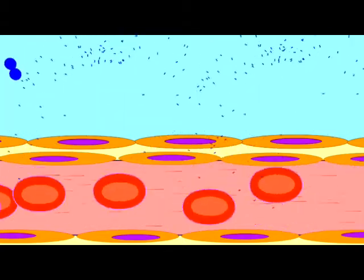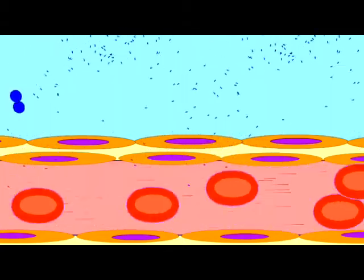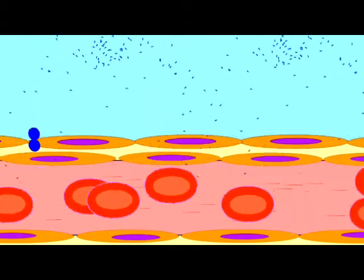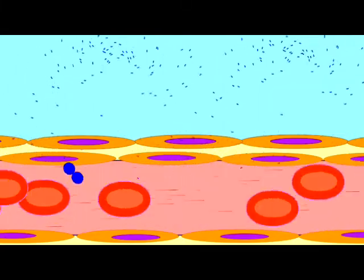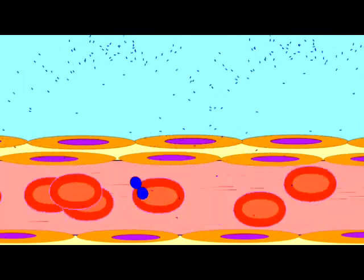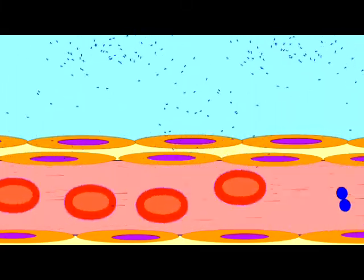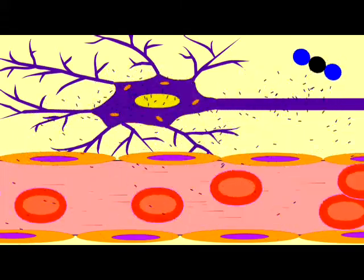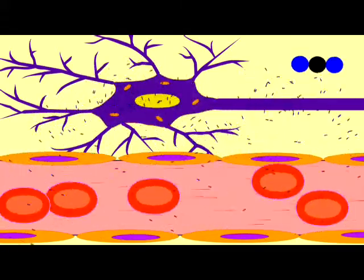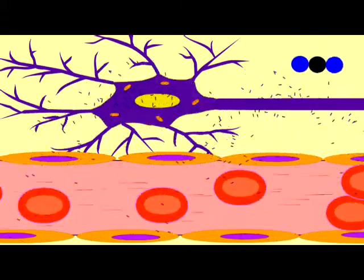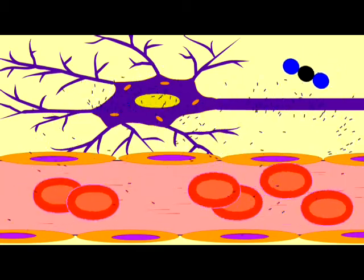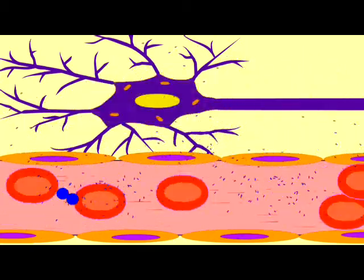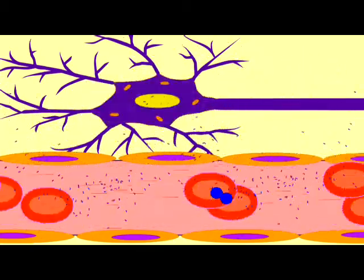In respiratory systems, there is a gas exchange as carbon dioxide leaves the organism and oxygen is introduced into the organism to allow this cellular respiration, which breaks down foodstuffs to produce ATP energy.